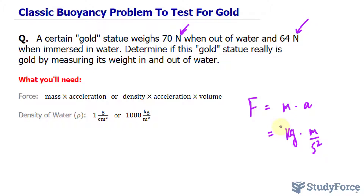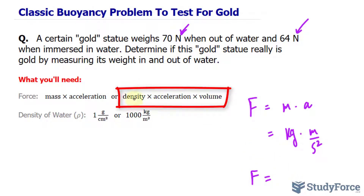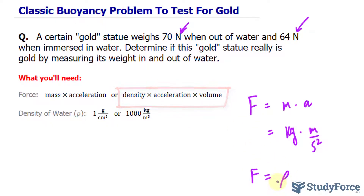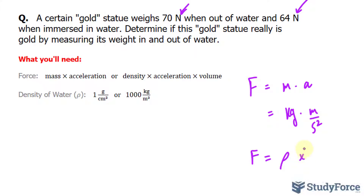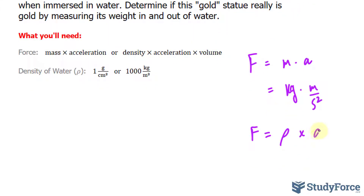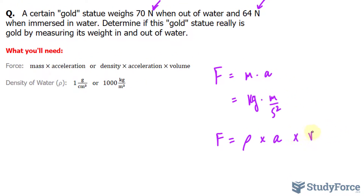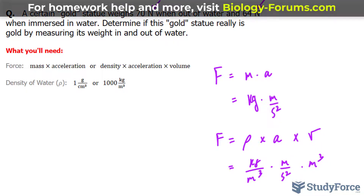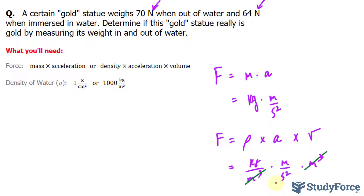You can also calculate force by taking the density — represented with the Greek letter rho — multiplied by the acceleration due to gravity, which is the constant 9.8, times the volume in cubic units. Density is kilograms per meters cubed, acceleration is meters per second squared, and volume is meters cubed. The units cancel out, leaving kilograms times meters per second squared, so this is a valid way of finding force as well.